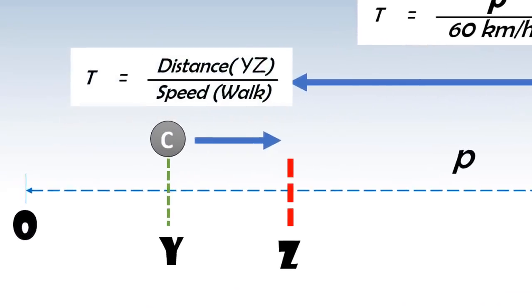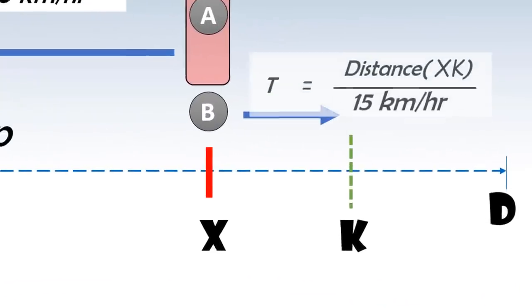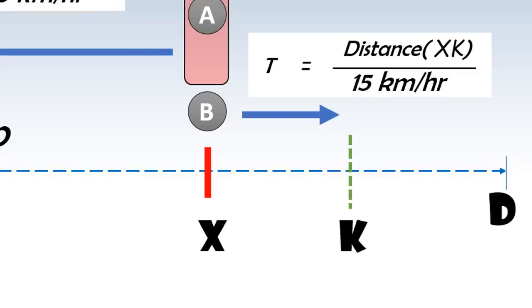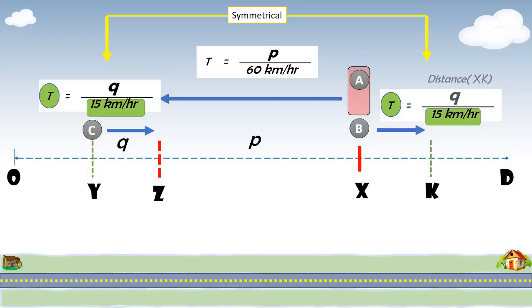In the same time T, Karl walks from point Y to point Z. Let's denote the distance Y-Z as Q. And we know the walking speed is 15 kilometers per hour. Also, in the same duration T, Bob walks from point X to point K at a speed of 15 kilometers per hour. Now, comparing the equations of Karl and Bob, it's very easy to say that both equations are symmetrical. Because in the same amount of time T, with the same walking speed, they both will cover exactly the same distance. So, the distance between X and K will also be equal to Q.